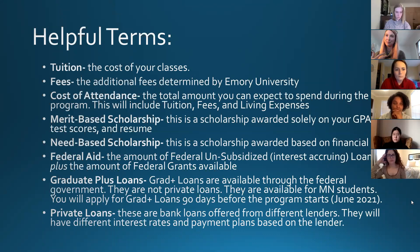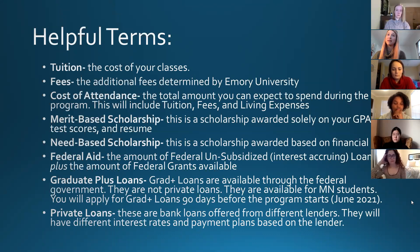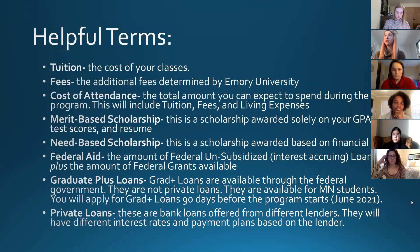Merit-based scholarships are institutional scholarships based solely on your GPA, test scores, and resume, awarded by the School of Nursing. Need-based scholarships are awarded by the university based on your financial need, determined from the FAFSA. Federal aid is the amount of federal unsubsidized loans plus federal grants available from your FAFSA. Graduate PLUS loans are loans available through the federal government — not private loans — available for MN students. You'll apply for them 90 days before the program starts, in June 2021. Private loans are bank loans from different lenders with varying interest rates.